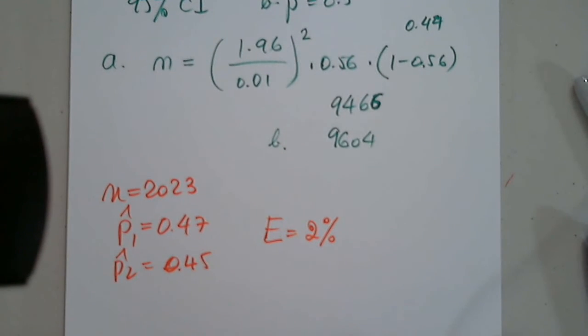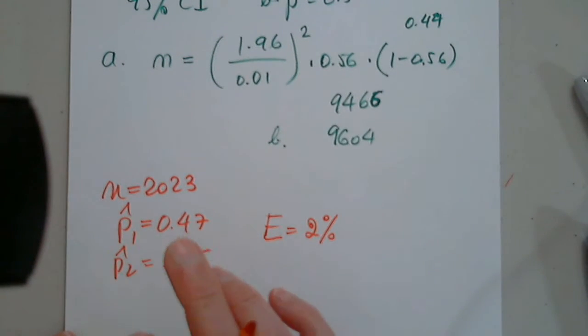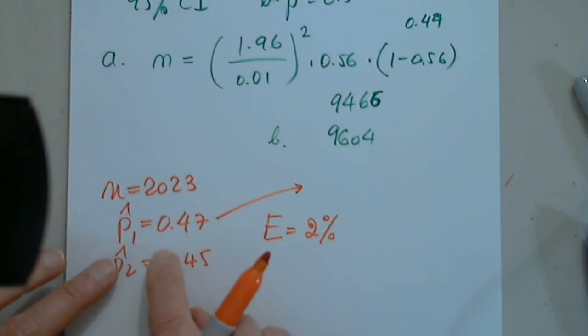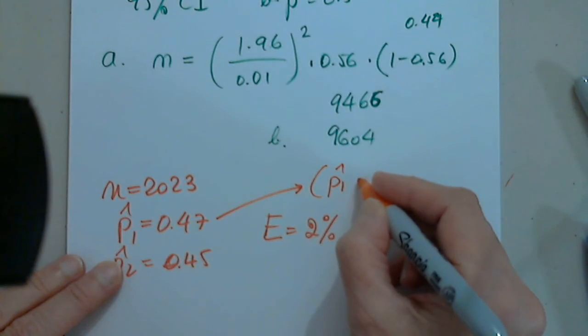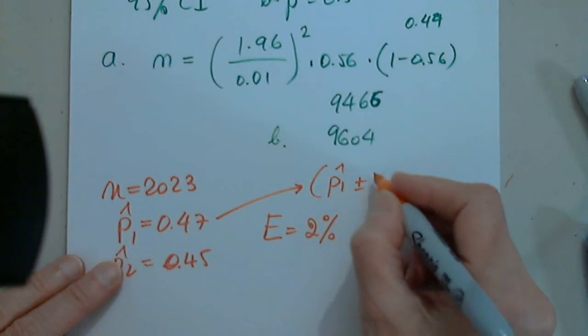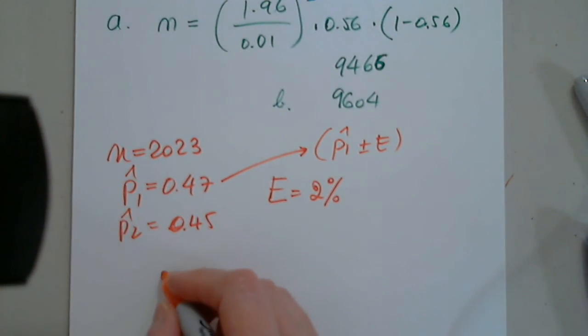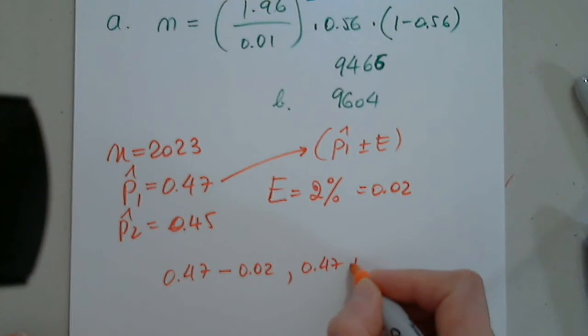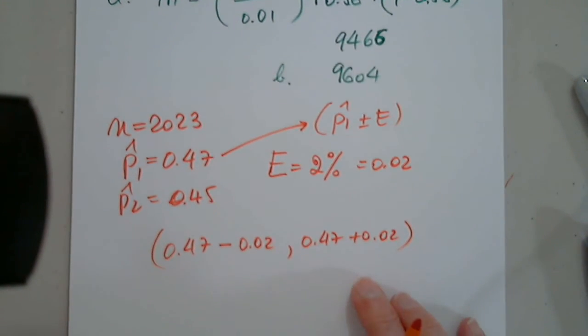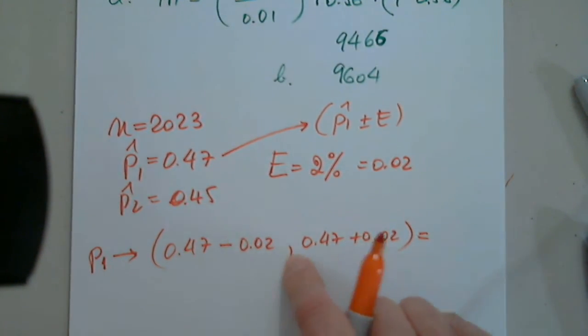Perfect. So, let's talk about this. So, the first one, the first estimate for one candidate should be P1 hat plus or minus marginal error. Plus or minus marginal error, but I want you to write this as an interval. So, 0.47 minus 0.02 because this is 0.02 and 0.47 plus 0.02. So, this is for the first one. So, P1, the P1, population 1, has this point estimate and has this interval estimate.